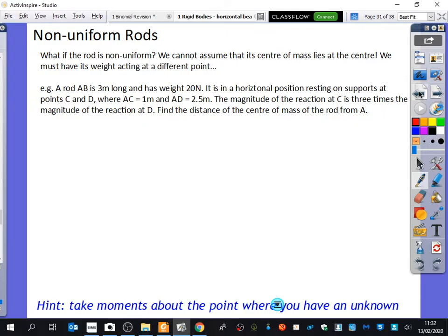Just as a reminder of what it means to be non-uniform, this metre ruler I've got here is uniform because it's made out of the same material. But if you imagine that some of it was made out of steel and some of it was made out of polystyrene, it would be non-uniform.